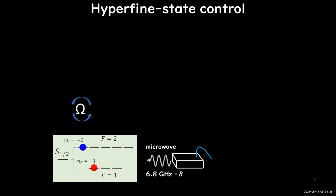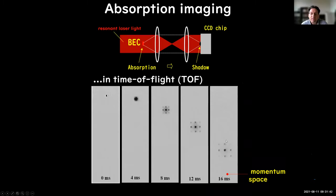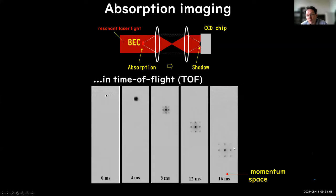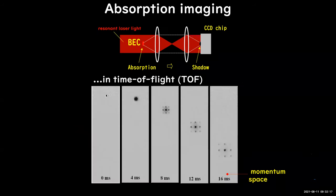Question from the audience: that image is a real image, not a Fourier image? This is a real image taken with the camera, but it's basically a Fourier transform of the initial distribution simply due to the time-of-flight expansion. It's still a little bit the convolution of the initial distribution with the momentum distribution, but if you wait long enough — on the order of 10 or 20 milliseconds — you are able to nicely distinguish what the momenta are.